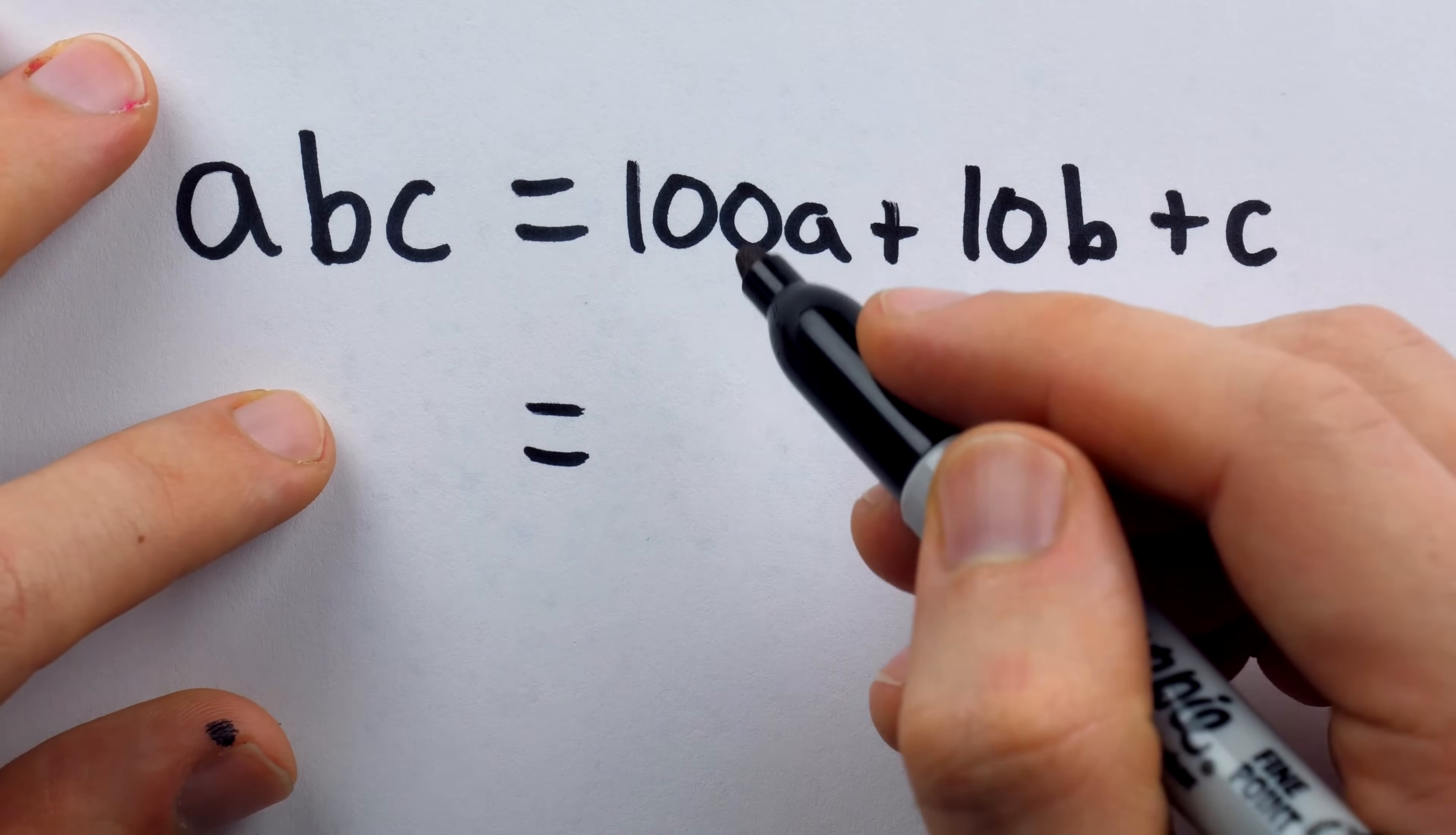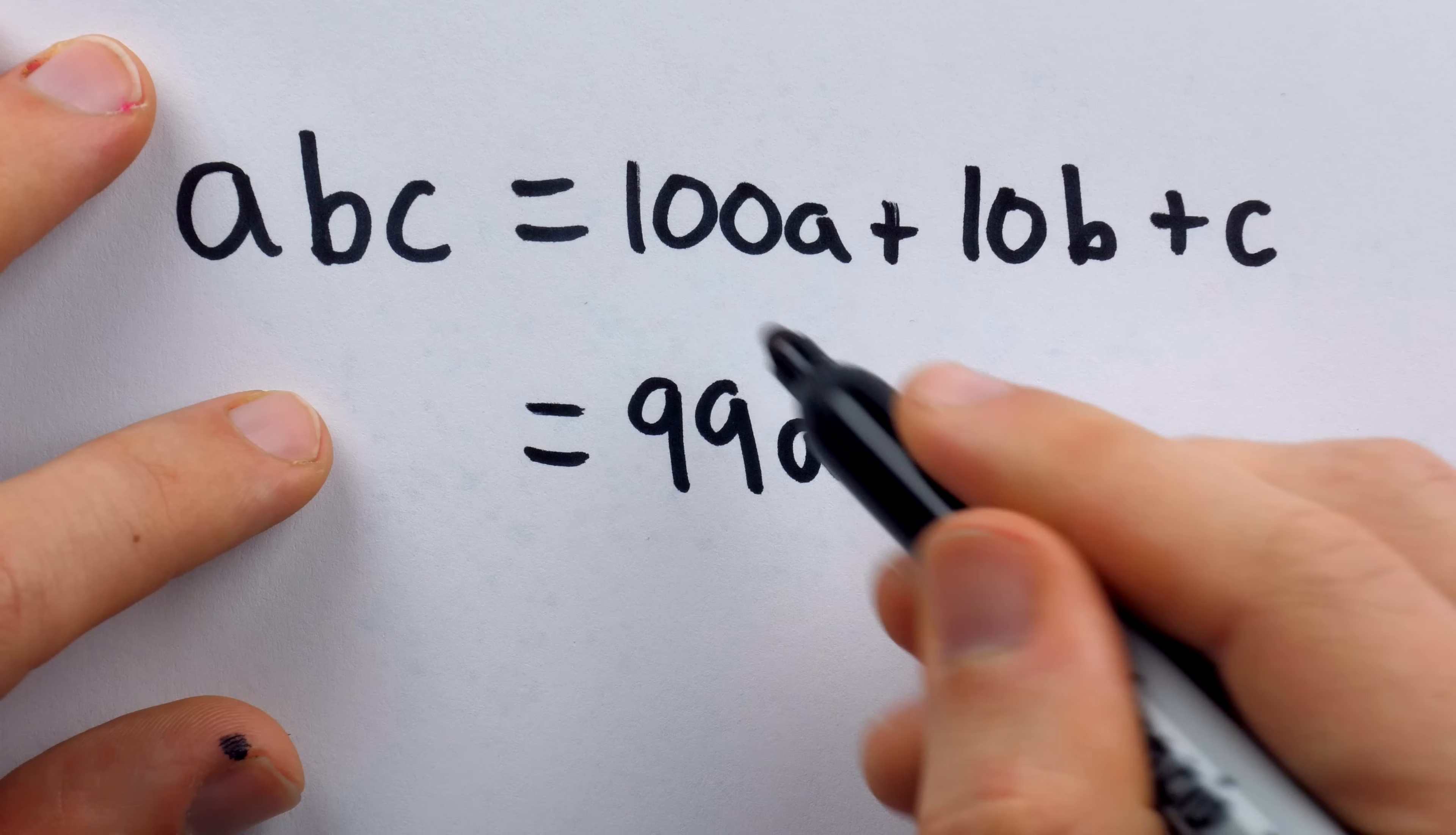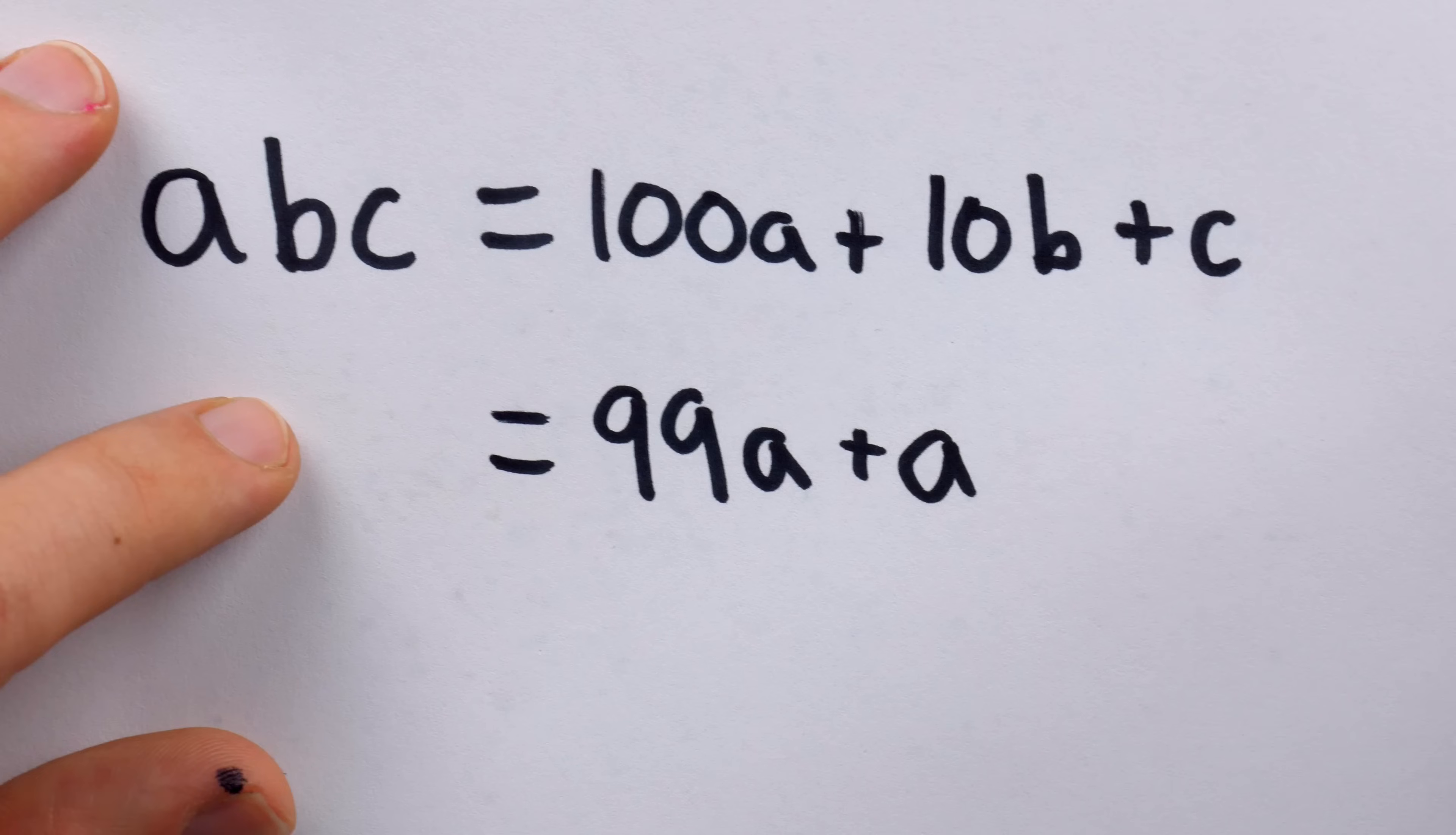Look at 100A. We can knock that down 1 to 99A, and this is a multiple of 11. Of course, we also need to add the A back in, that way we're not actually changing the expression.